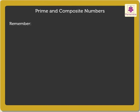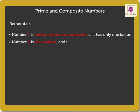Remember these points. 1 is neither prime nor composite as it has only one factor. 2 is the smallest and the only even prime number. 3 is the smallest odd prime number.